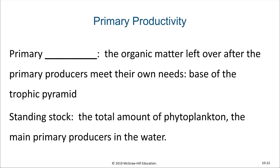Primary production is the organic matter that is left over after the primary producers have met their own needs, and this makes up the base of the trophic pyramid. The diatoms, which are the primary producers in the Antarctic food web, perform photosynthesis but also use photosynthetic products for their own growth, development, and reproduction. They produce oxygen through photosynthesis but also consume oxygen through their own respiration. So primary production is really just the excess material after primary producers meet their own needs.